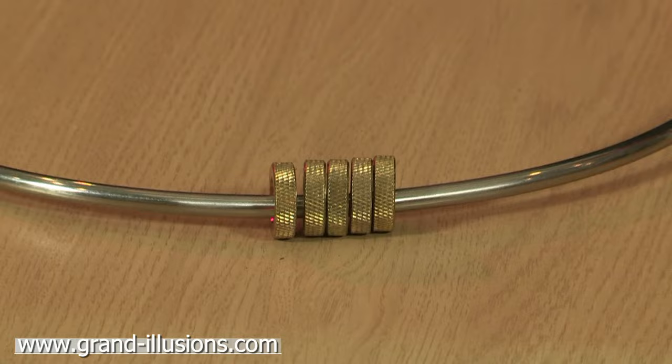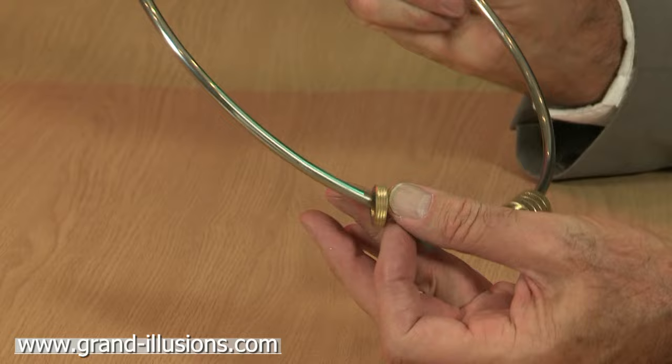There's these washers with interiors with a slightly larger diameter than the hoop itself, made of steel, and when you set them spinning...